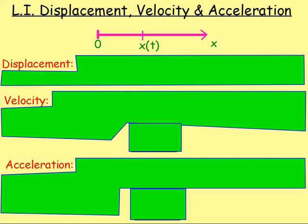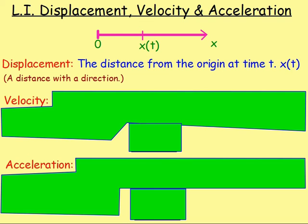First of all, what is meant by each of these words? Well, displacement: imagine if you have an object that is at rest at a starting position. The object will then start to move away from that position, moving a certain distance in a certain direction. We call that the displacement — the distance away from the origin where it starts, but it also has a direction.